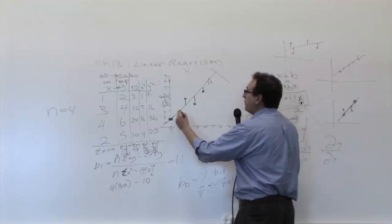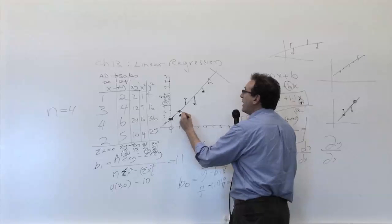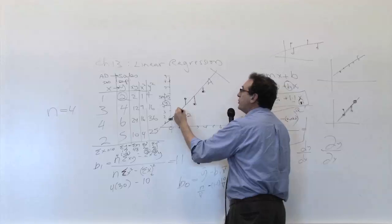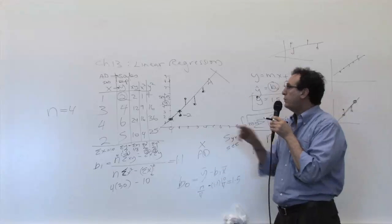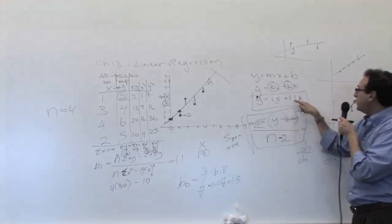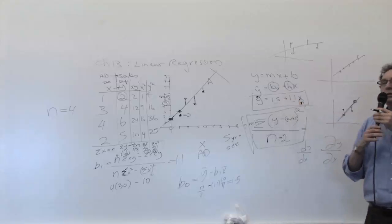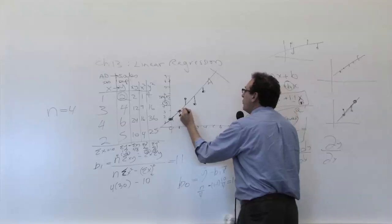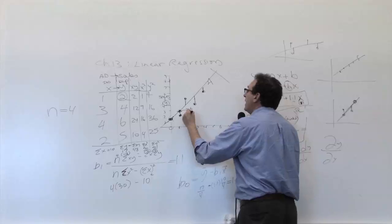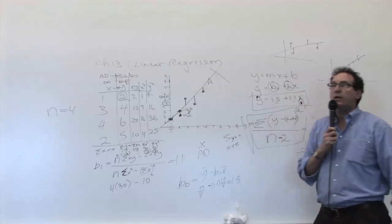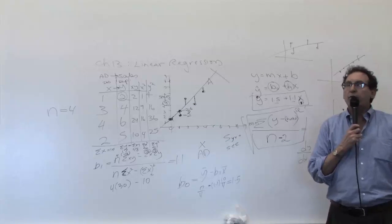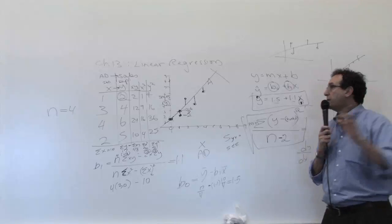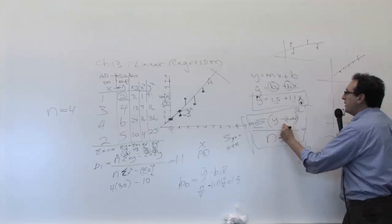Then use this formula to actually calculate how far the dots are from the straight line. For example, when x equals 1, the actual y equals 2. And the prediction from the equation — plugging 1 in — gives 1 times 1.1 et cetera, which equals 2.6. So how far is the actual dot from the straight line? How far is 2.6 from 2? That's 0.6. Then you're going to take that 0.6 and square it.